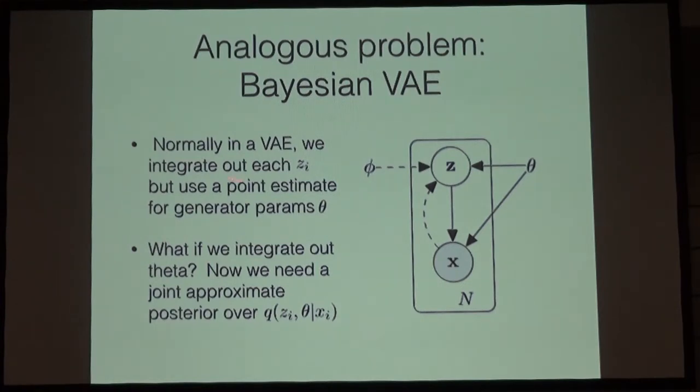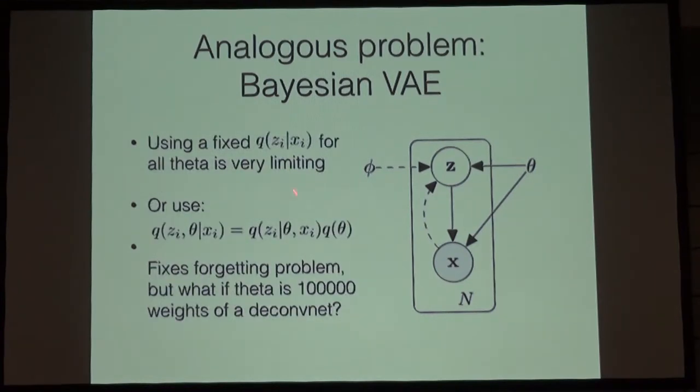We also see the exact same problem of conditioning on a neural network when we try to solve Bayesian VAEs. Normally, in a variational autoencoder, we integrate out the Z for every X. If we are training on lots of data, we can rely on large numbers to help us identify these generative parameters. If we want to be Bayesian about this in the larger sense, we could also integrate out these generative parameters. What this requires now is an approximate posterior over Q of Zi given the generative model we're looking at, and Xi.